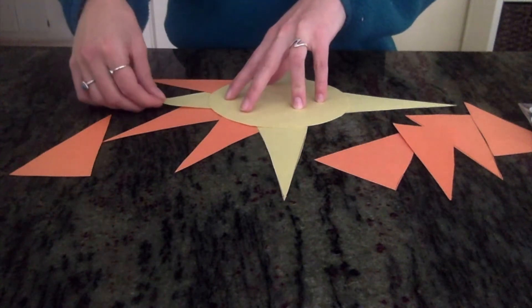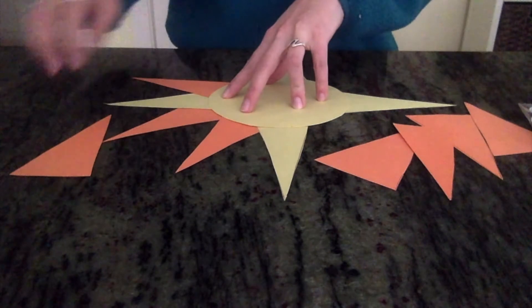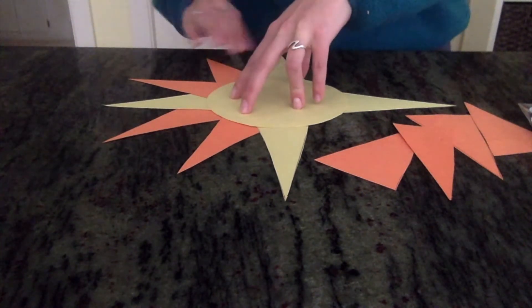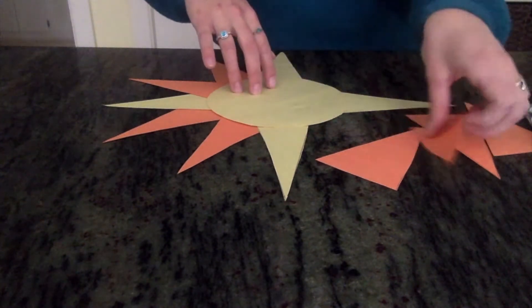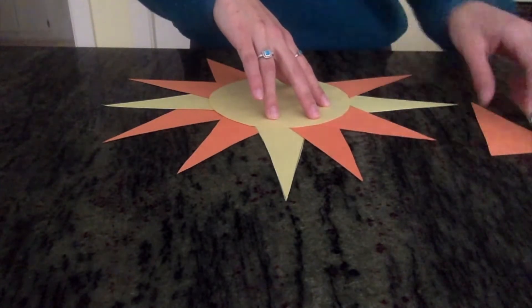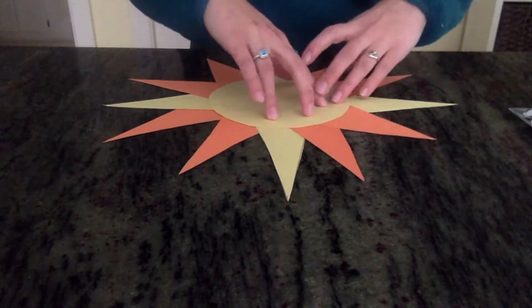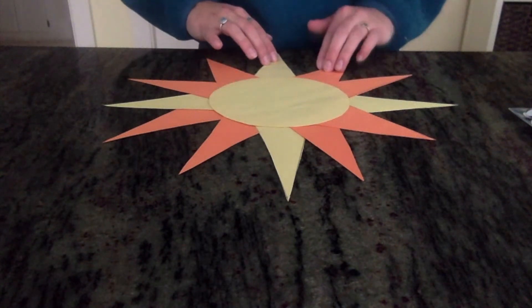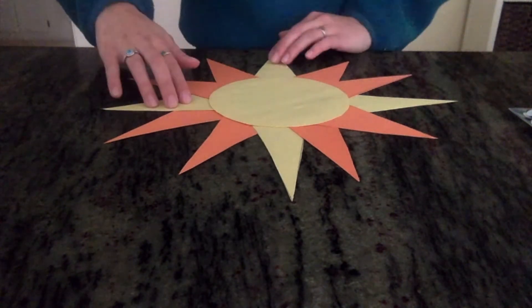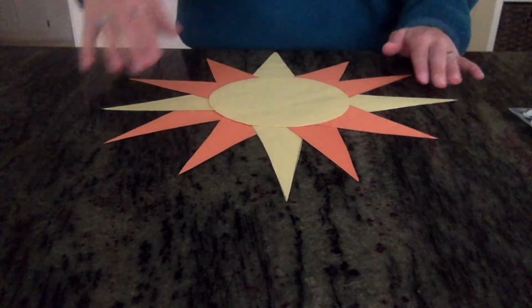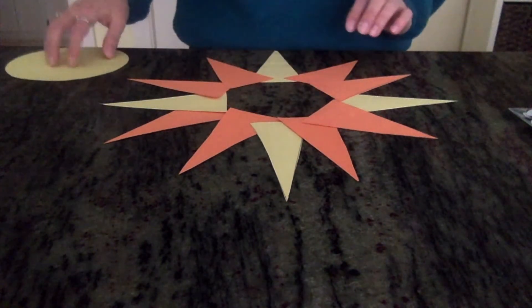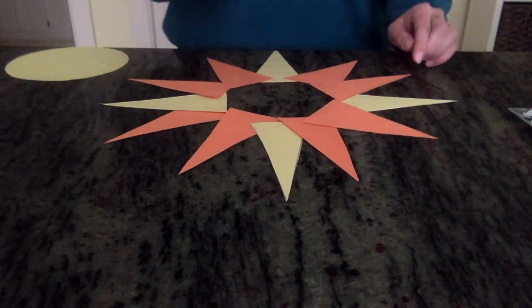After that we can kind of place our other ones around and they should be as straight as possible, but it's okay if they're not perfect. And once we have those, we want to make sure that our 3, 6, 9, and 12 are nice and straight. And then we can pick up our circle and start gluing our triangles together.